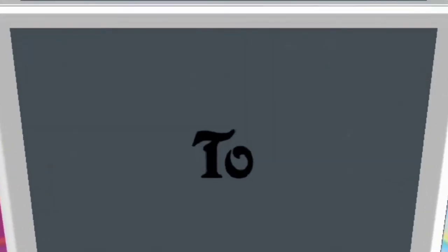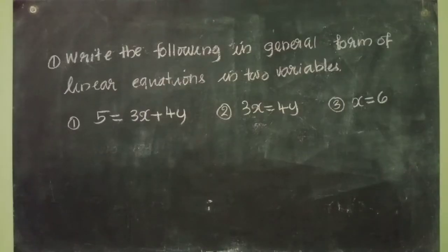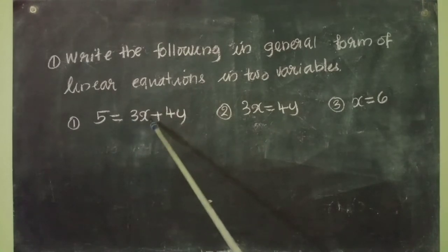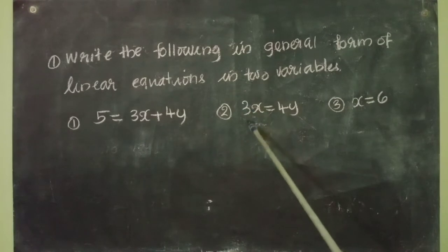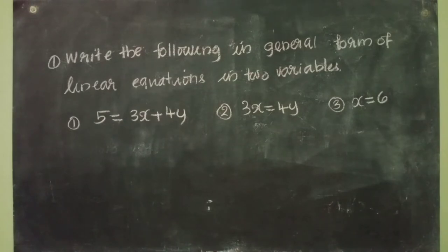Dear students, welcome to Blackboard. Question: write the following in general form of linear equations in two variables. First question: 5 equal to 3x plus 4y. Second question: 3x equal to 4y. Third question: x equal to 6. You try to write the answer.